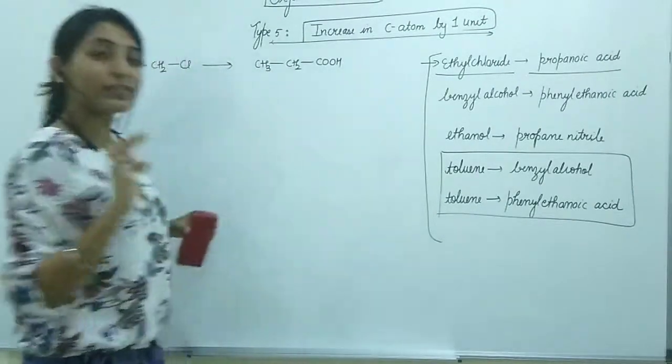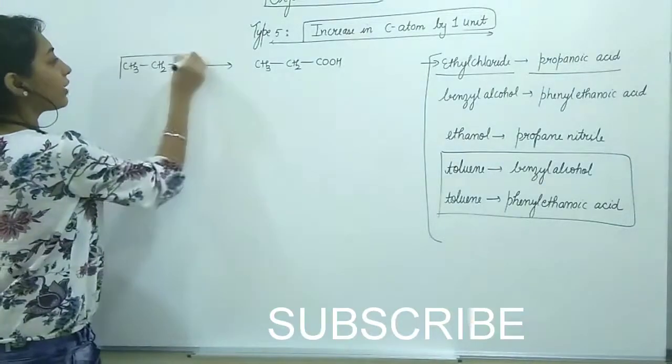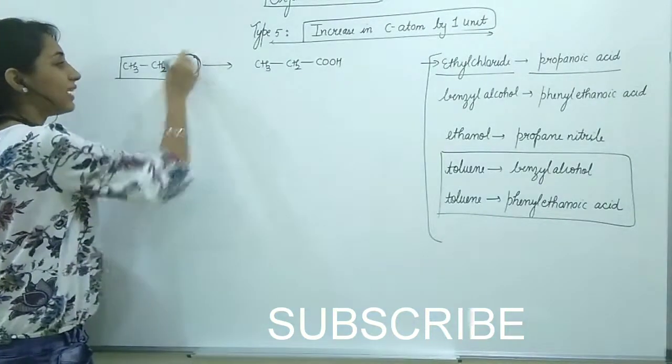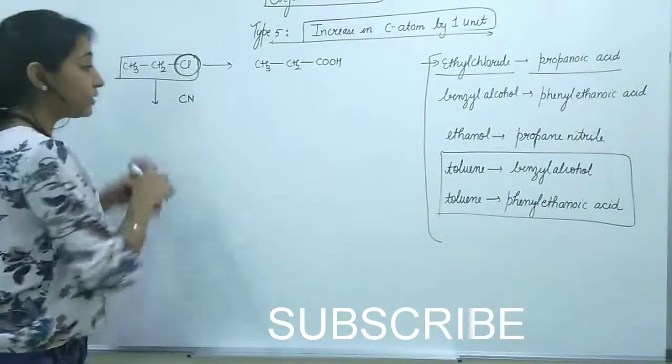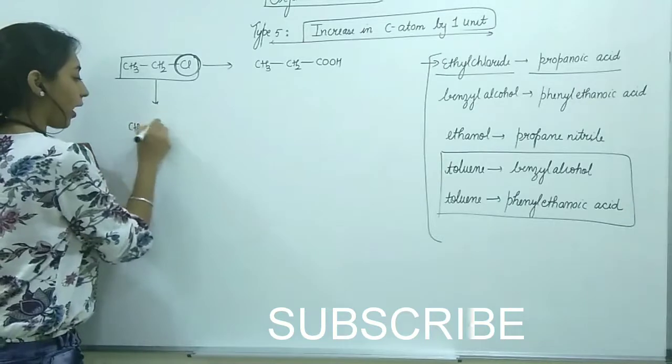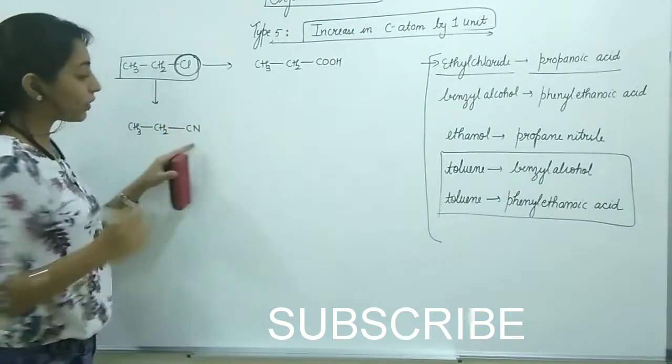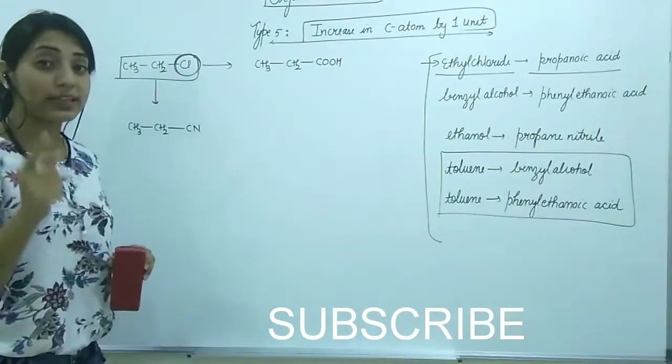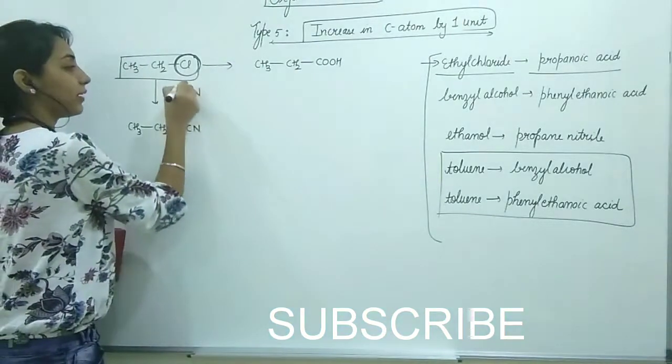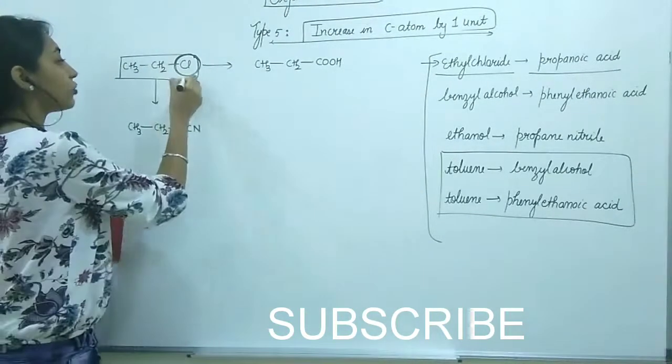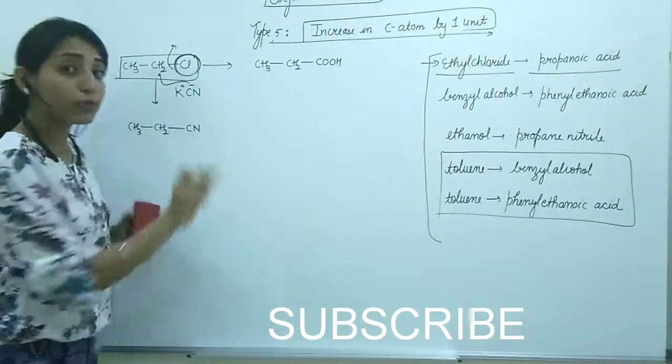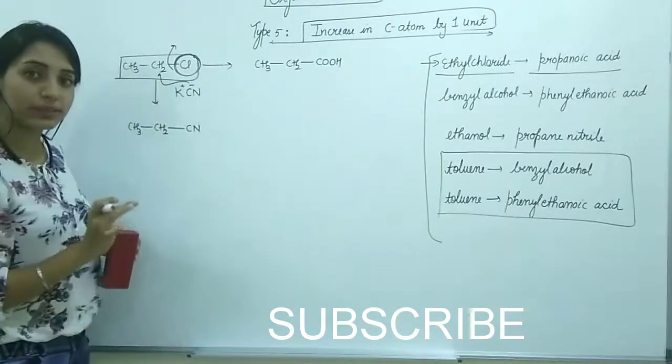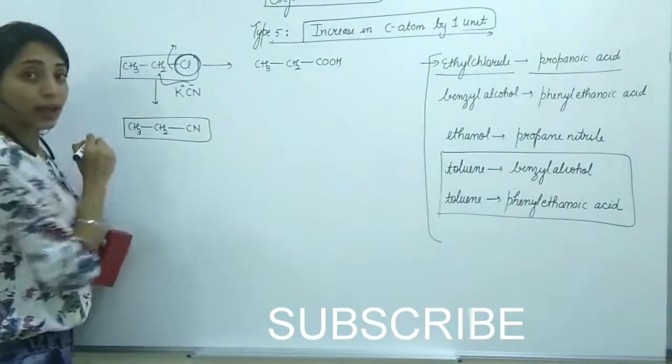Some students get confused - this is a functional group, why are you making it part of the chain? Remember, whenever COOH or COH groups are present, they're considered part of the chain itself, not just as functional groups. So there are three carbon atoms in the main chain. Now see the procedure: convert Cl to CN by adding KCN. The CN attacks and Cl goes away.